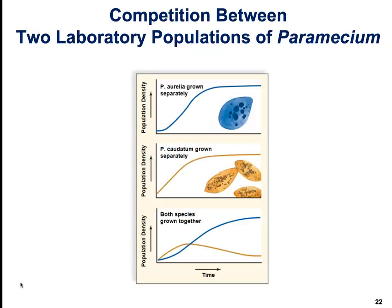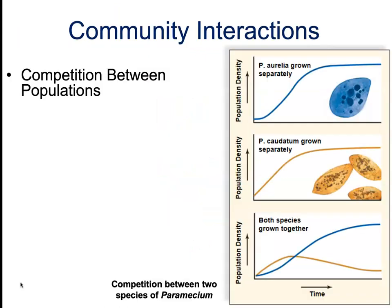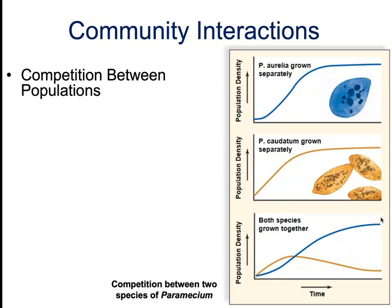We're going to talk about competition between two laboratory populations of paramecium. Competition occurs when members of two different species try to use a single resource — things like light, space, or nutrients — that is in limited supply. In the experiment, two species, P. aurelia and P. caudatum, both grew well on their own following logistic growth curves. But when both were placed into the same test tube, only one species survived. The successful species had a higher biotic potential than the other.